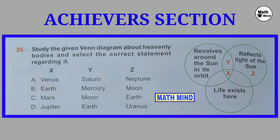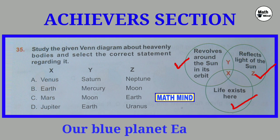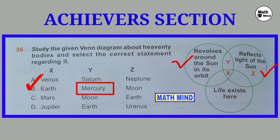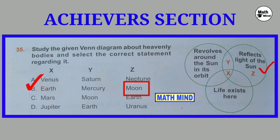Question number 35: Study the given Venn diagram about heavenly bodies and select the correct statement regarding it. X revolves around the sun in its orbit, reflects light of the sun, and life exists here — this is our blue planet Earth. Y revolves around the sun and reflects light of the sun; in option B it is Mercury, which is a planet. Z is Moon in option B — Moon reflects light of the sun. So option B is correct.